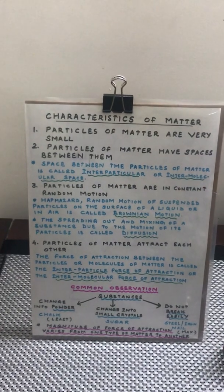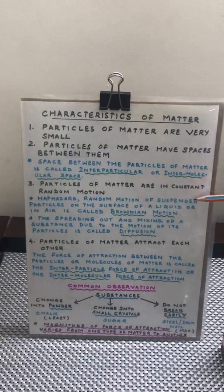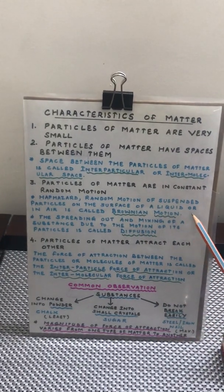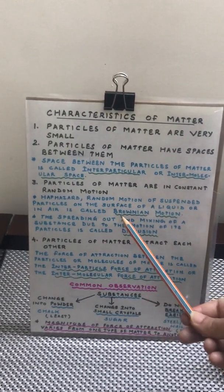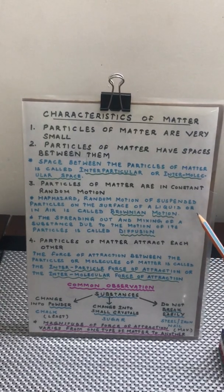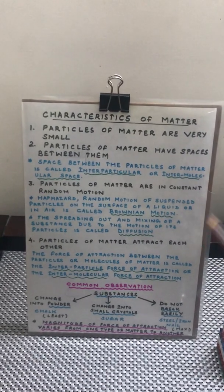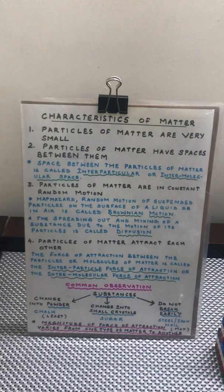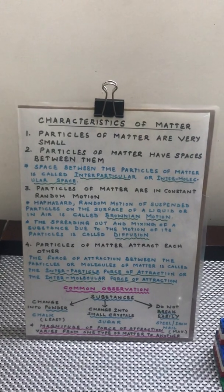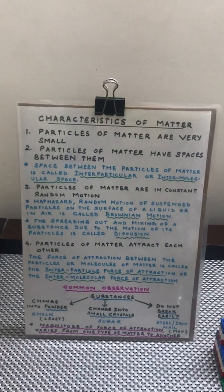Haphazard — meaning in any direction, zigzag, random — motion of suspended particles on the surface of a liquid or in air is called Brownian motion. Brownian motion is very commonly seen on a bright sunny day if you happen to sit in your room or stand under a tree and see certain dust particles moving very fast.